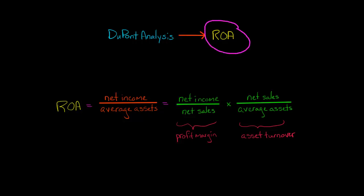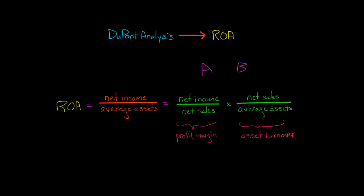ROA is an incredibly helpful metric, and that's because it allows us to compare the profitability of two companies that might be of very different sizes. It wouldn't make sense to compare the net income of two companies and say company A has a higher net income than company B, therefore company A is doing a better job than company B.